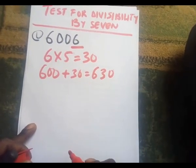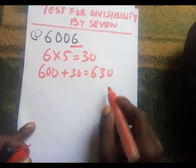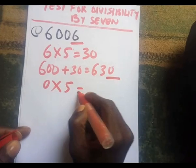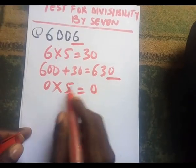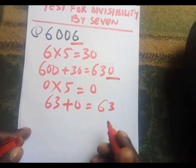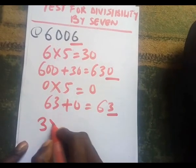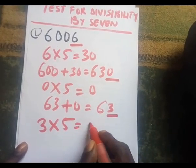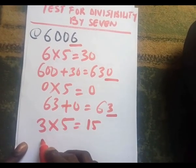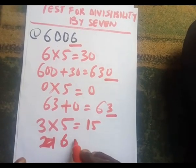We have 630, but we still don't know whether this number is divisible by seven. So we take the last digit, which is zero. We multiply zero by five to get zero, and add it to the remaining digits: sixty-three plus zero gives sixty-three. The last digit is now three, so we multiply three by five to get fifteen, then add fifteen to six.